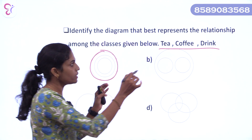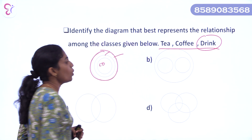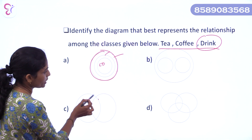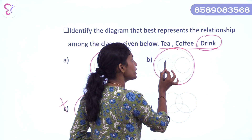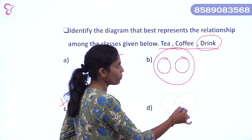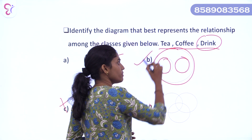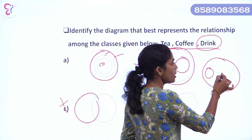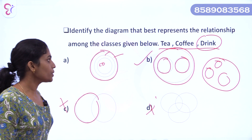This is a drink — we have tea and coffee. Tea and coffee are both types of drink, and they are separate from each other. We have two drinks outside. Tea and coffee are interrelated as drinks. The answer is Option B — tea and coffee are inside drink, connected to one another.